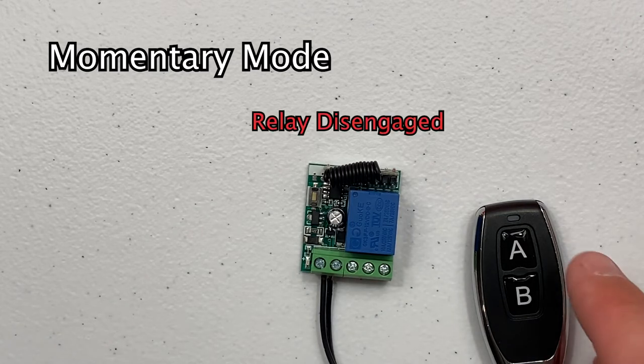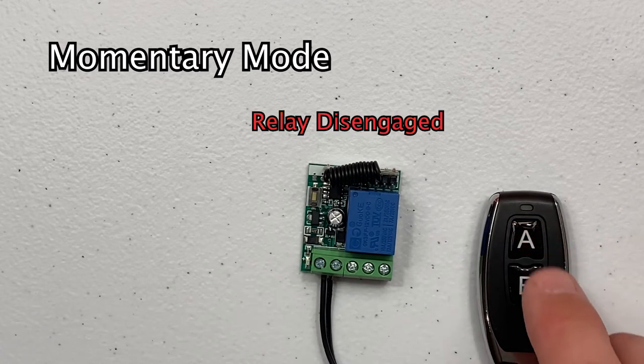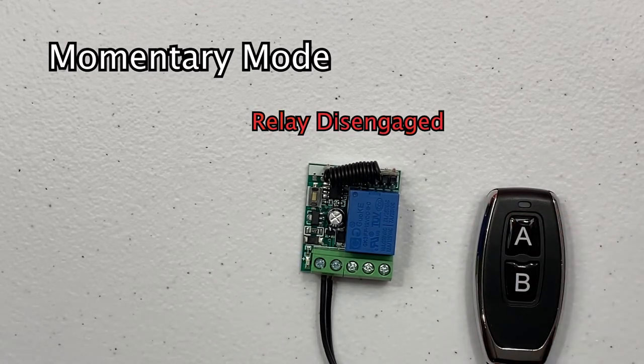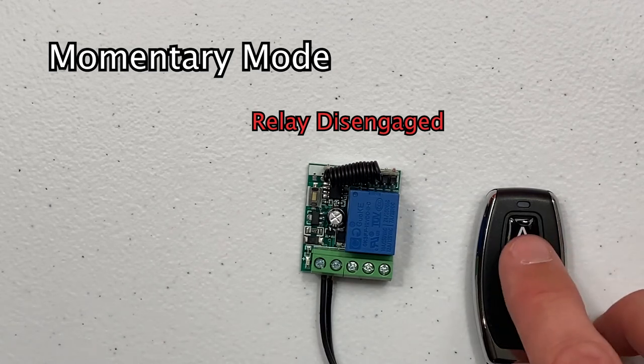Now, pressing the button on the remote will engage the relay and the relay will stay engaged as long as the button is held. Once the relay is paired with the remote, the red LED will indicate the status of the relay.